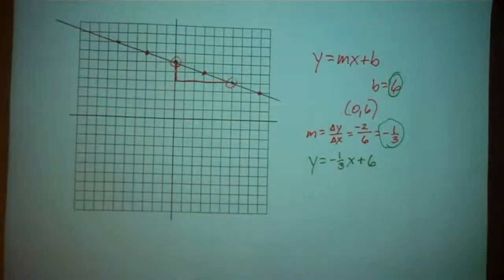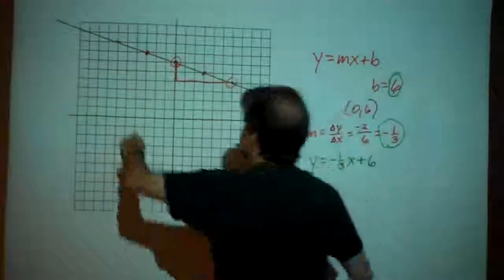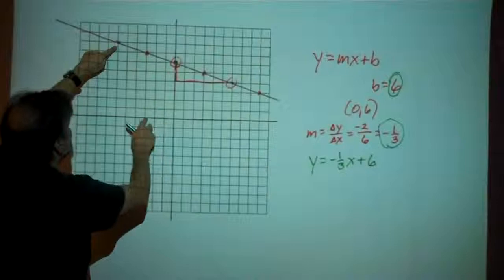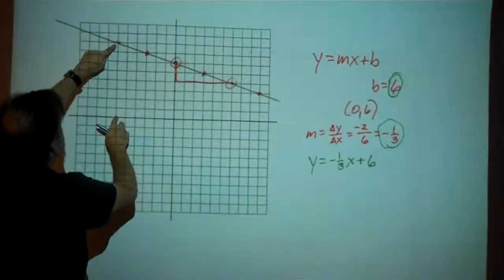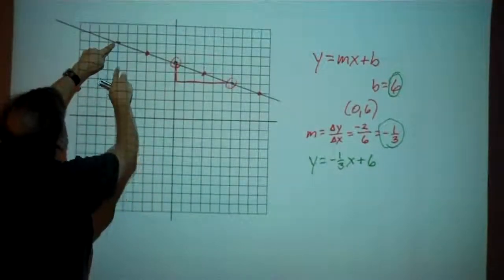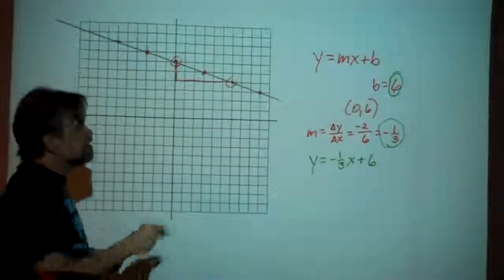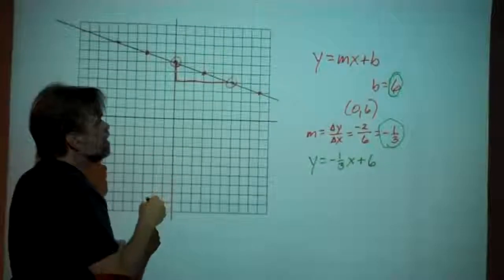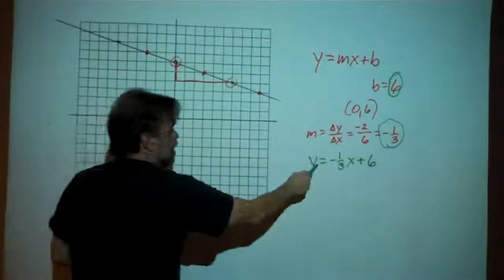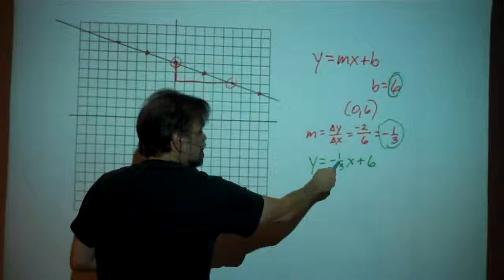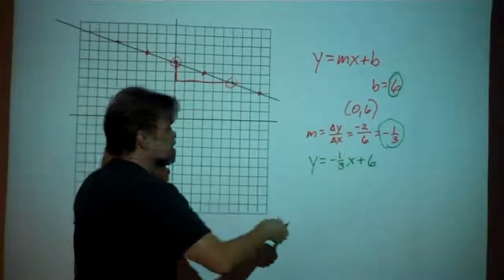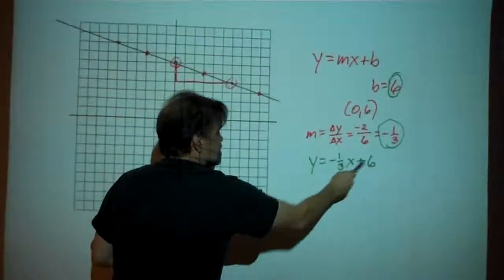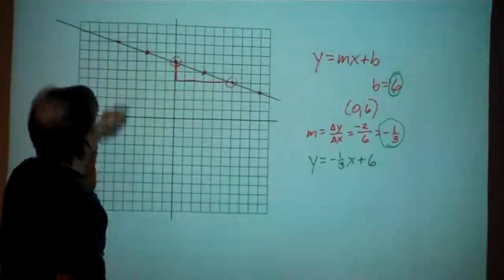Every single point on that line is going to match this equation. Let's choose an arbitrary point to verify — the point (-6, 8). If I replace x with negative 6: negative one-third times negative 6 is positive 2 (negative times negative is positive, and one-third of 6 is 2), plus 6 is 8. Got it!